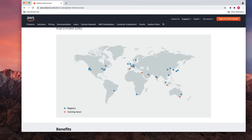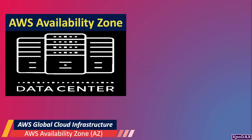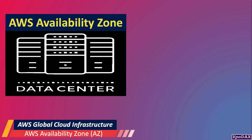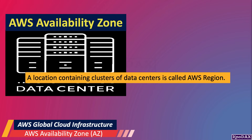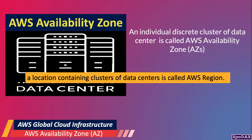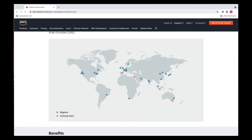Now, another important concept in AWS is AWS Availability Zones, also called AZ for short. As we talked earlier, AWS has clusters of data centers in multiple locations around the world. The location containing clusters of data centers is called the AWS Region. An individual discrete cluster of data centers is called an AWS Availability Zone — which is one or more discrete data centers with redundant power, networking, and connectivity in an AWS region.